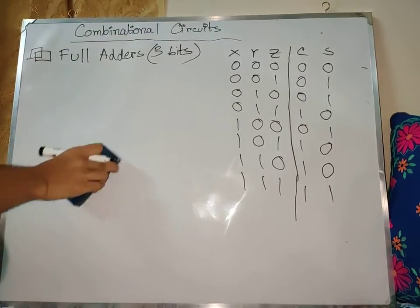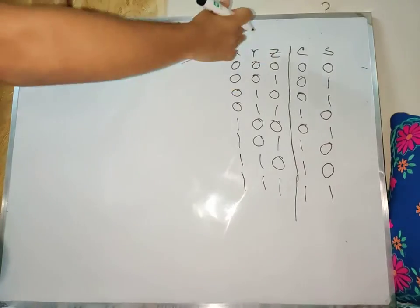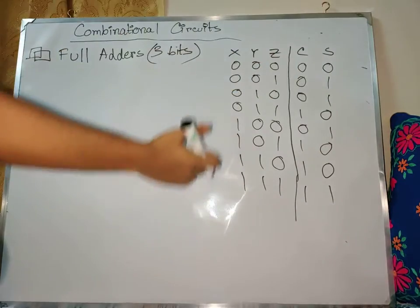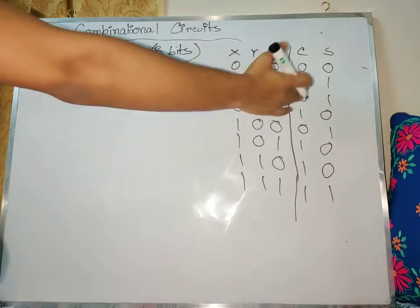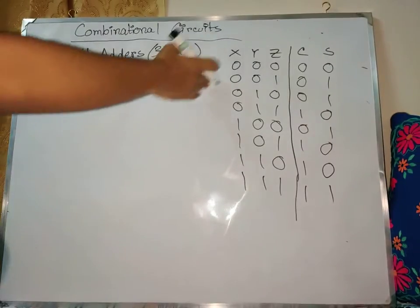So 3 bits are like x, y, z. And xyz gives us a truth table with carry and sum as outputs.